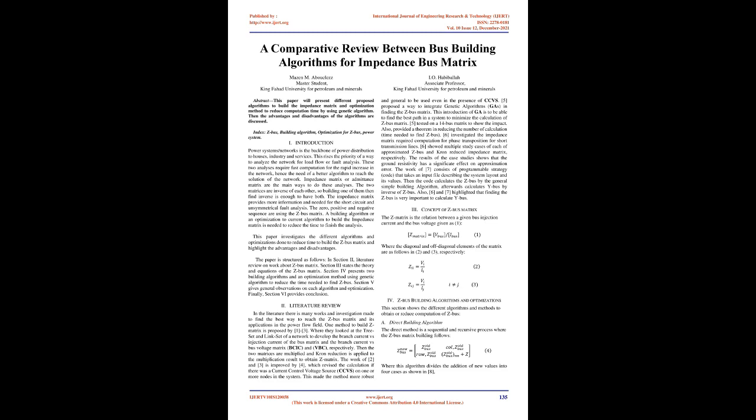Power system networks are the backbone of power distribution to houses, industry, and services. This raises the priority of a way to analyze the network for load flow or fault analysis. These two analyses require fast computation for the rapid increase in the network, hence the need for a better algorithm to reach the solution. Impedance matrix or admittance matrix are the main ways to perform these analyses.